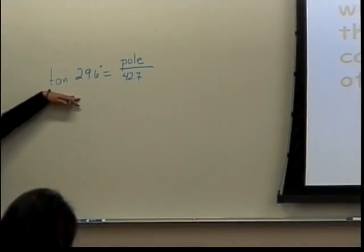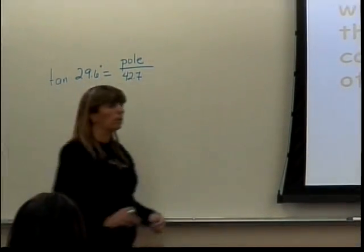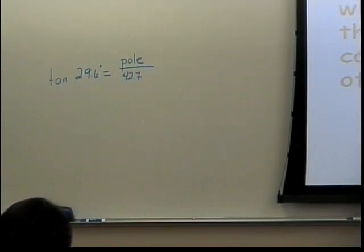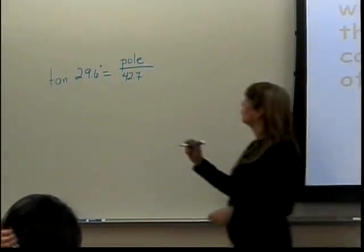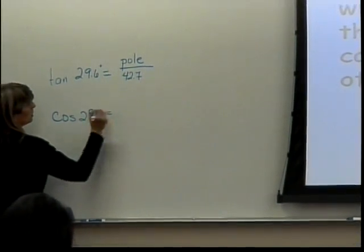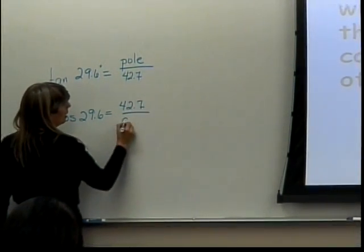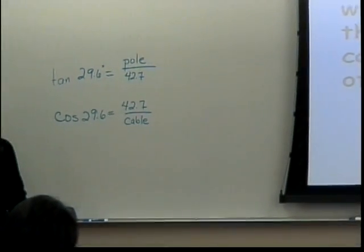We've already figured out how to solve these — cross multiply and go for it. Now, what if I wanted to find the cable? The cable is the hypotenuse relative to the angle. What has the hypotenuse and the adjacent in it? Cosine. So cosine of 29.6 is equal to the adjacent, which is 42.7, over the cable — or x, or whatever you want to call it. Again, cross multiply and you can find out what the cable is.